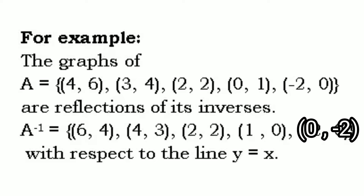For example, the graphs of set A = {(4,6), (3,4), (2,2), (0,1), (-2,0)} are reflections of its inverses. A inverse = {(6,4), (4,3), (2,2), (1,0), (-2,0)}, with respect to the line y equals x. When set A is graphed or plotted in the Cartesian plane, its reflection will be its inverse with respect to the line y equals x.